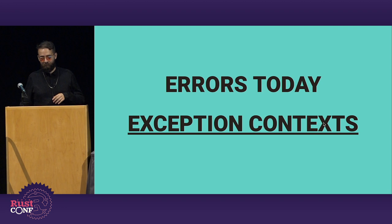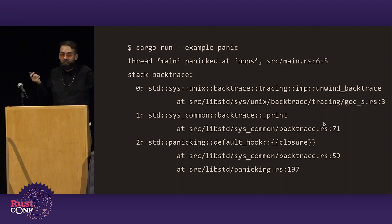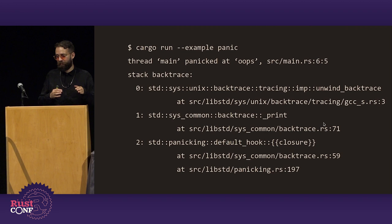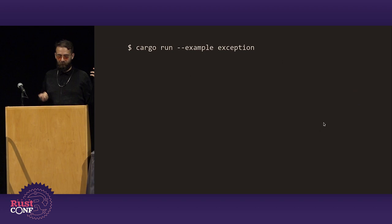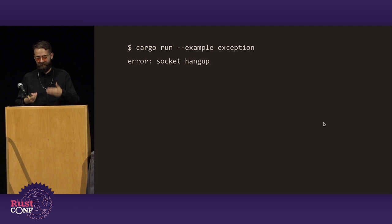Third challenge: exception context. If code panics — for example, function main just panics with 'oops' — when you run it you get 'thread main panicked at oops, src/main.rs, line 6' and then a backtrace showing how you got there. It's not always the nicest to look at, but you can find what went wrong. You get a location and a list of reasons. But if we run previous code and an error occurs that doesn't panic, you might get 'error: socket hung up.' Did this happen on an incoming request? An outgoing request? Where is this happening? That's not super.